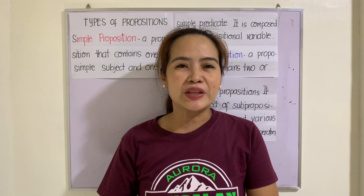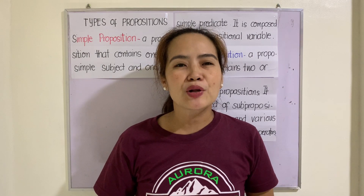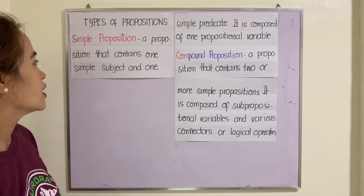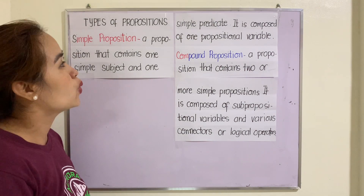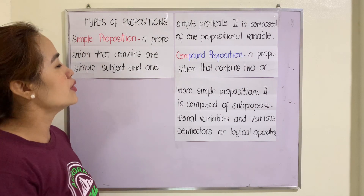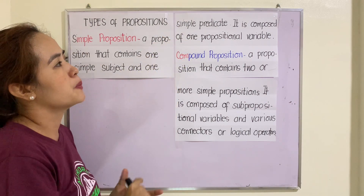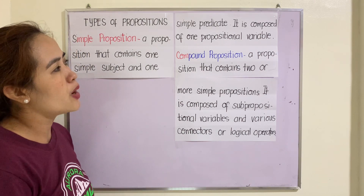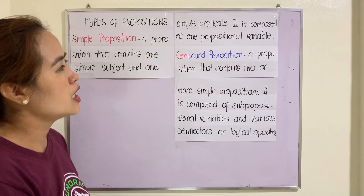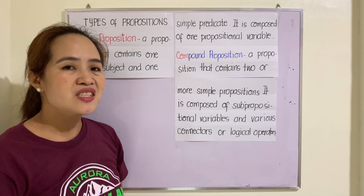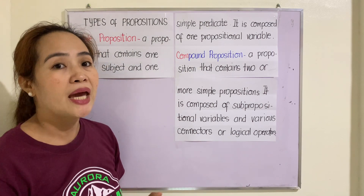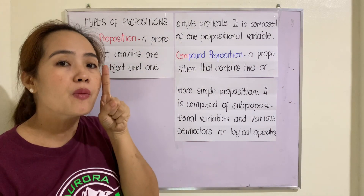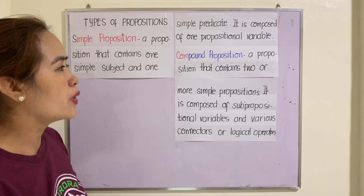Good day everyone. Our topic for today is distinguishing simple and compound propositions. A simple proposition is a proposition that contains one simple subject and one simple predicate, separated by a verb. It is composed of one propositional variable, which you can symbolize using p, q, n, or r.